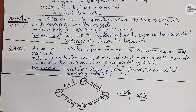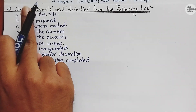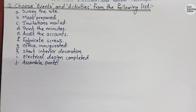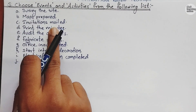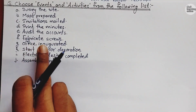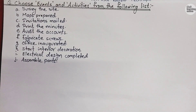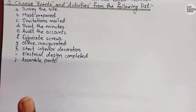I hope you understood the meaning of activity, event, and networks. Now I have a homework for you. You have to write the answer in the comment section. The question is: choose events and activities from the following list — survey the site, maps prepared, invitations mailed, print the minutes, audit the accounts, fabricate screws, office inaugurated, start interior decoration, electrical design completed, assemble parts. Pause the video and write your answers, then I will provide the final answers.